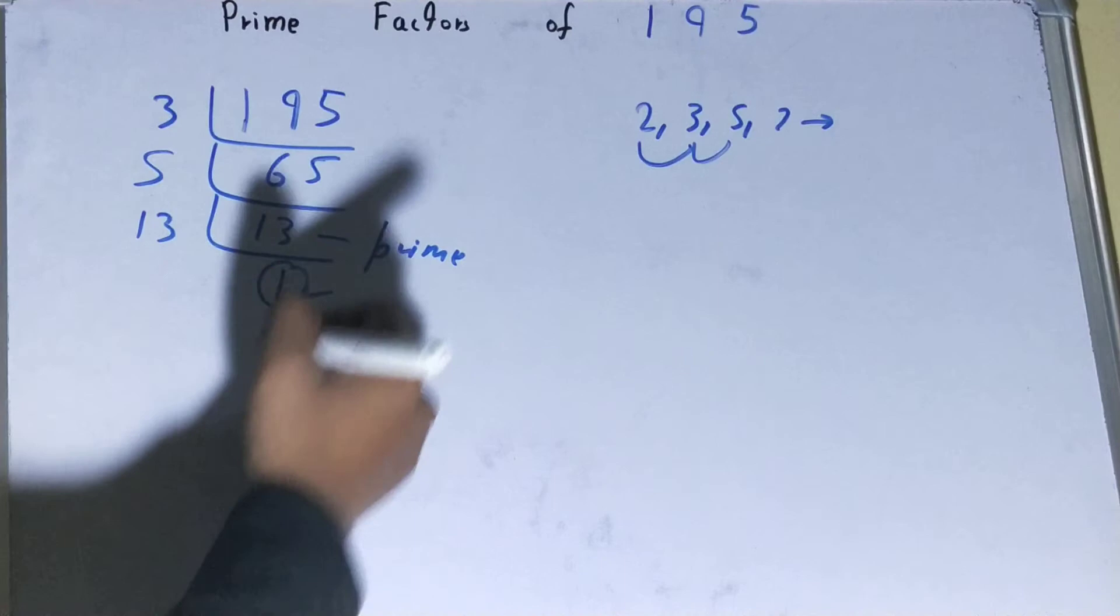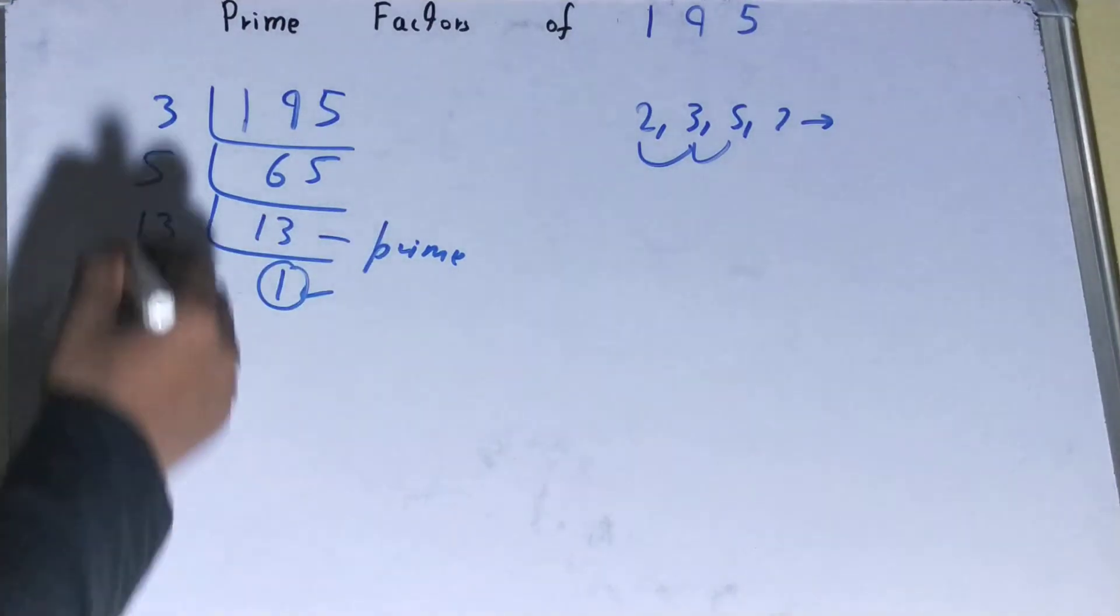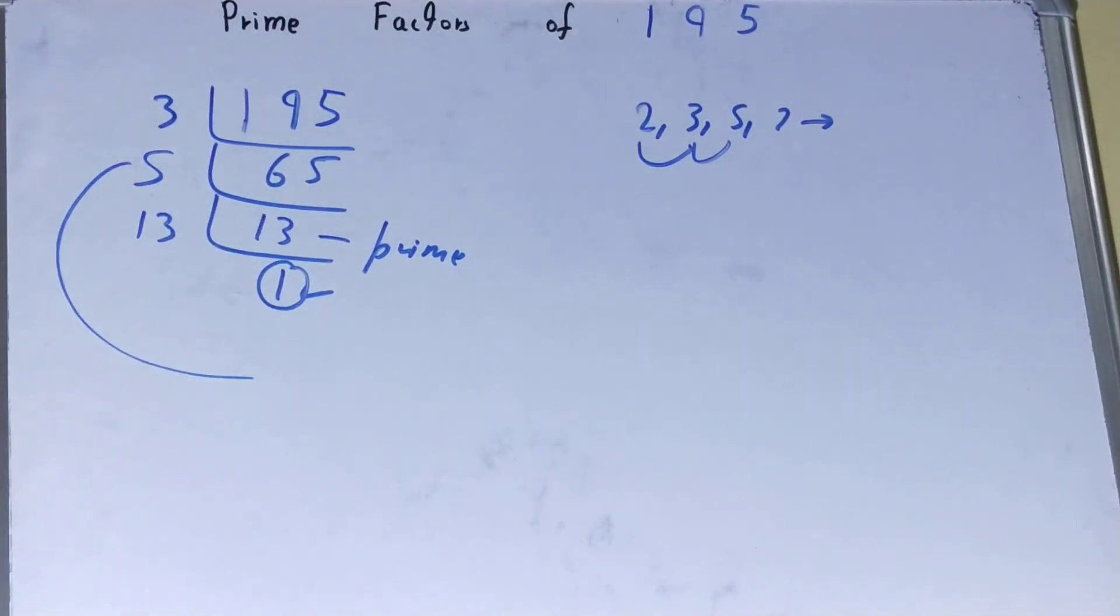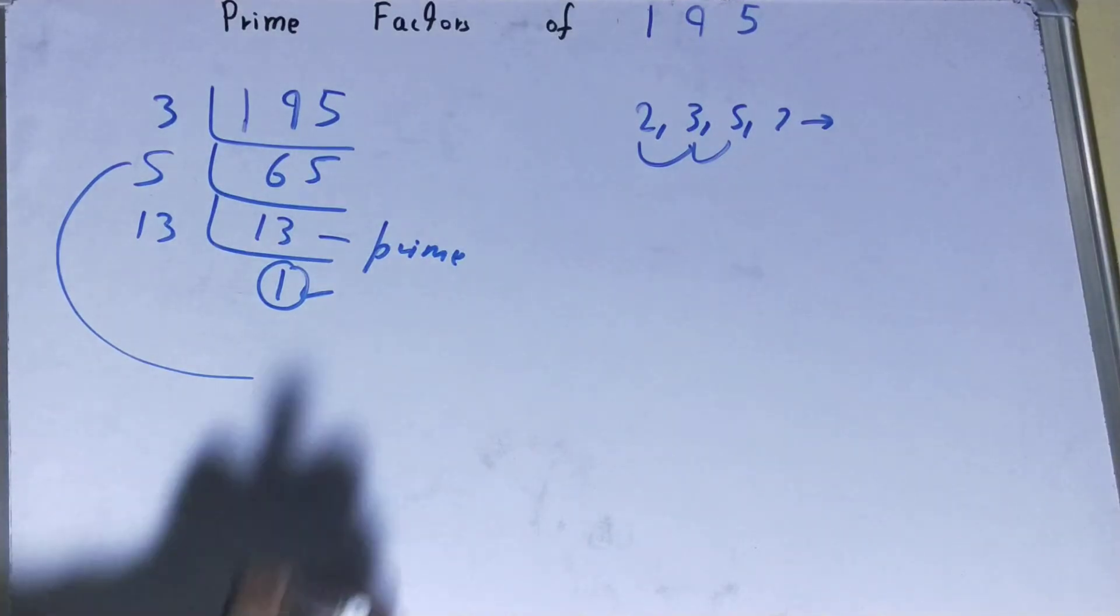Once you have that, you will be left with one, and once you're left with one, the work is done. Whatever you have on the left-hand side will be the set of prime factors for the number 195, that is three times five times thirteen.